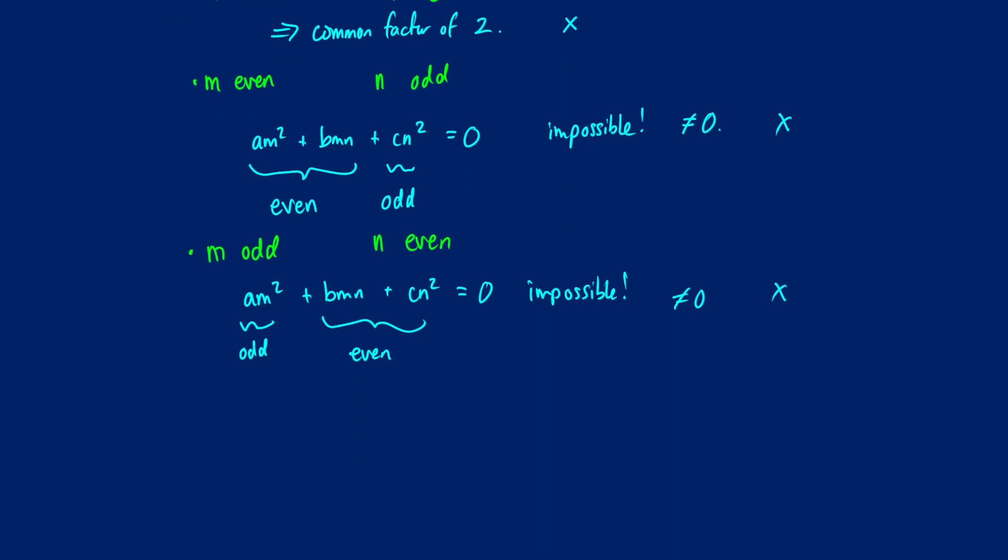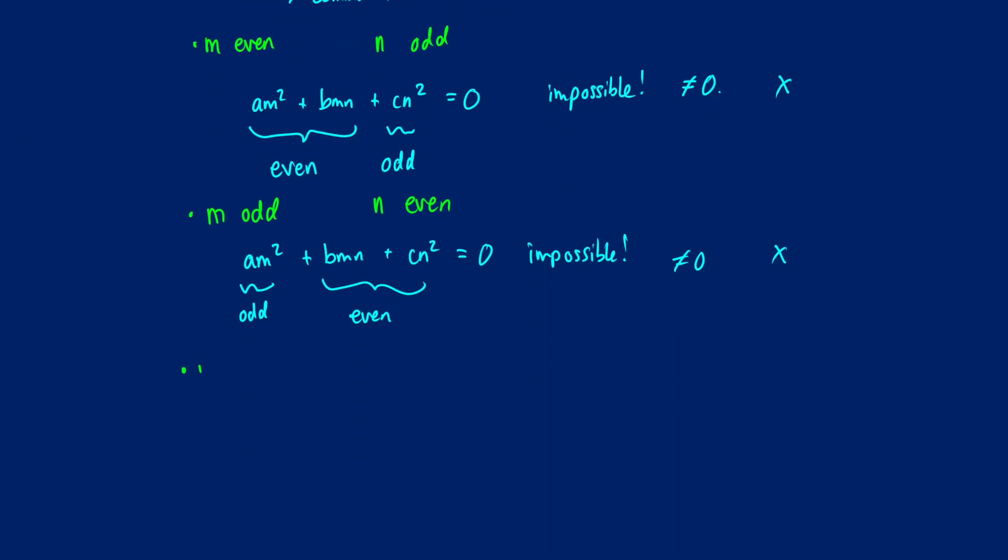Finally, we have one more case to consider. This is the case where we have m odd and we also have n odd. So if this works, this means that we do have a rational root. But if not, all of our cases are impossible, so we get a contradiction. So if we have am squared plus bmn plus cn squared is equal to 0, what's going to happen here?